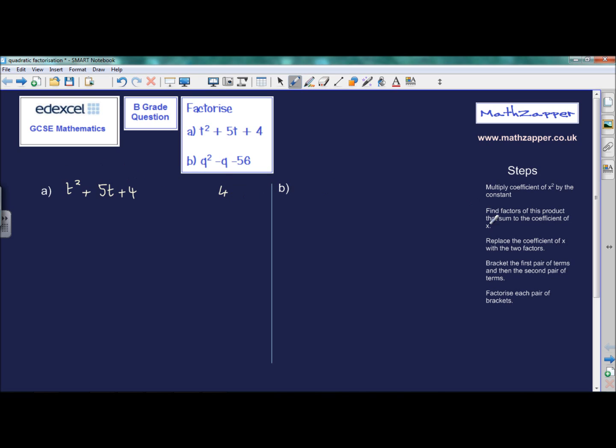The next step, we have to find the factors of this product that sum to the coefficient of x. So first of all, let's just find the factors of 4. They are plus or minus 1 times plus or minus 4, and plus or minus 2 squared. There are no other factors of 4.